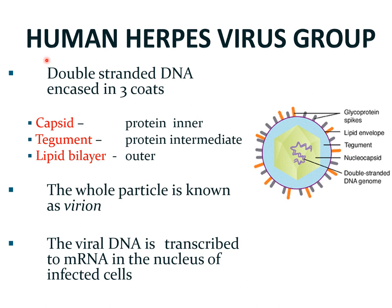The viruses in the human herpes group consist of a double-stranded DNA which is protected by a protein coat known as the capsid, which is in turn surrounded by an intermediate protein coat known as the tegument. The outermost boundary is encased in a lipid bilayer, from which glycoprotein spikes help in the fusion of the viruses with the host cells. The whole particle is known as a virion, and once the virus infects the host cells, the viral DNA is transcribed to messenger RNA in the nucleus of the infected cells.